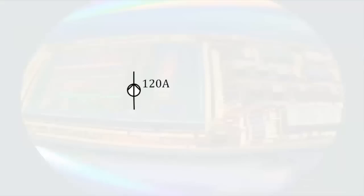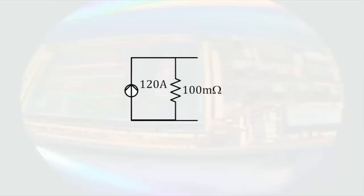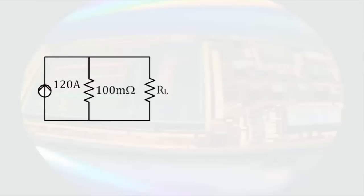We also have something called an ideal current source. This is a current source from which we get the same current no matter how much current is drawn from it, no matter what the voltage is across it. This is no more realistic than an ideal voltage source. Let's start with an ideal current source and add a resistance in parallel. If we add a load resistor to this circuit, we can see how much current gets to the load by using current division.